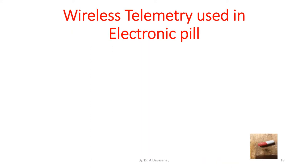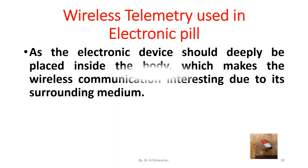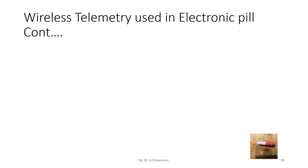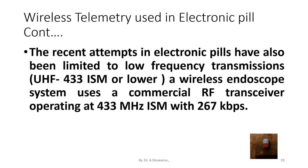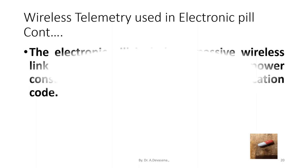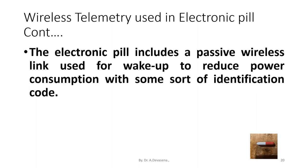Wireless telemetry is used in the electronic pill. The electronic device should be deeply placed inside the body, which makes wireless communication interesting due to its surrounding medium. Recent attempts in electronic pills have been limited to low frequency transmissions, i.e., UHF 433 ISM or lower. A wireless endoscope system uses a commercial RF transceiver operating at 433 MHz ISM with 267 kbps. The electronic pill includes a passive wireless link used for wake-up to reduce power consumption with some sort of identification code.